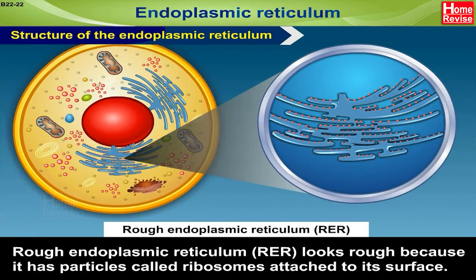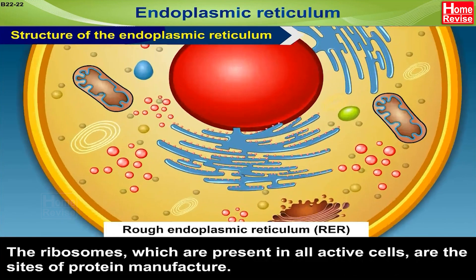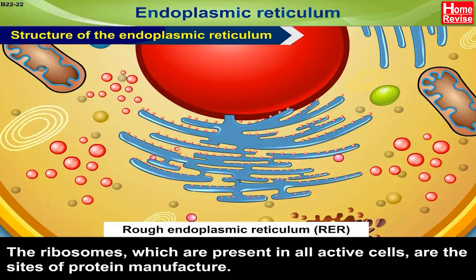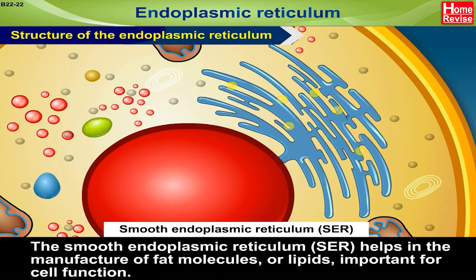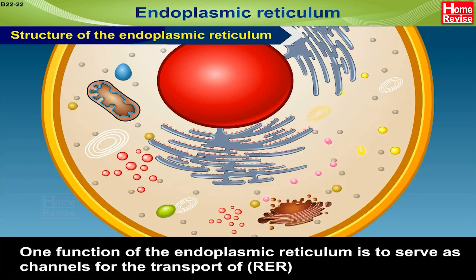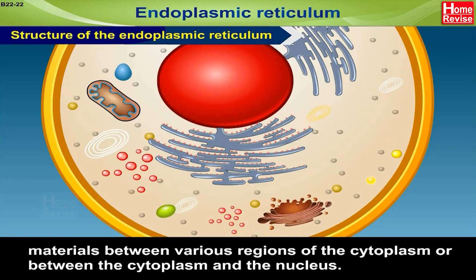Rough endoplasmic reticulum looks rough because it has particles called ribosomes attached to its surface. The ribosomes, which are present in all active cells, are the sites of protein manufacture. The smooth endoplasmic reticulum helps in the manufacture of fat molecules, or lipids, which are important for cell function. Thus, one function of the endoplasmic reticulum is to serve as a channel for the transport of material between various regions of the cytoplasm, or between the cytoplasm and the nucleus.